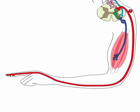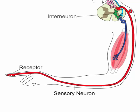A reflex occurs when nerve impulses travel over a simple neuron pathway called a reflex arc. Reflex arcs have five basic parts: receptors, sensory neurons, interneurons, motor neurons, and effectors.